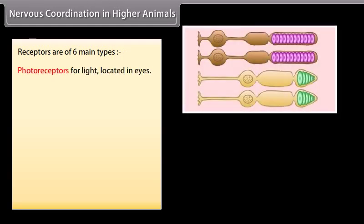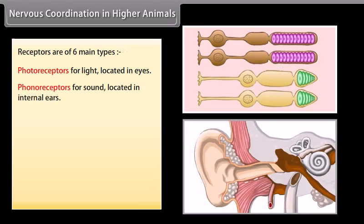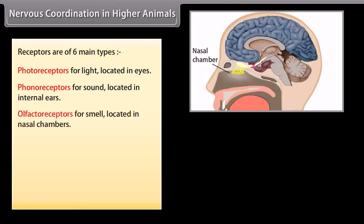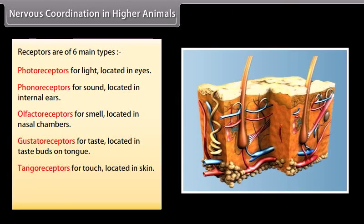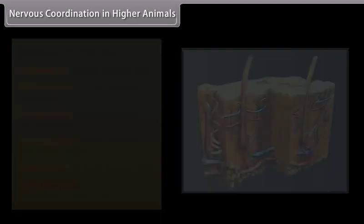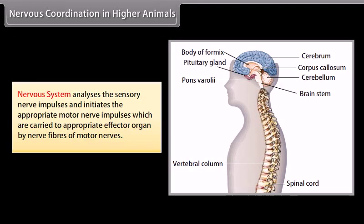Photoreceptors for light, located in the eyes. Phonoreceptors for sound, located in the internal ears. Olfactory receptors for smell, located in nasal chambers. Gustatory receptors for taste, located in taste buds on the tongue. Tangoreceptors for touch, located in the skin. Thermoreceptors for changes in temperature, located in the skin.